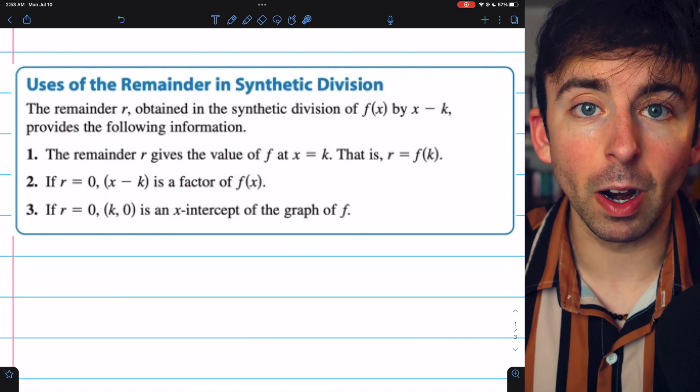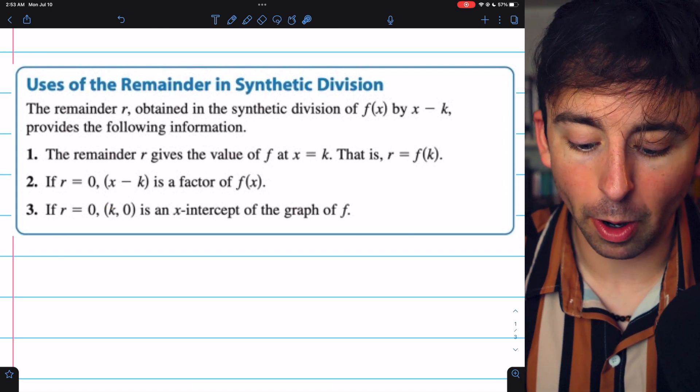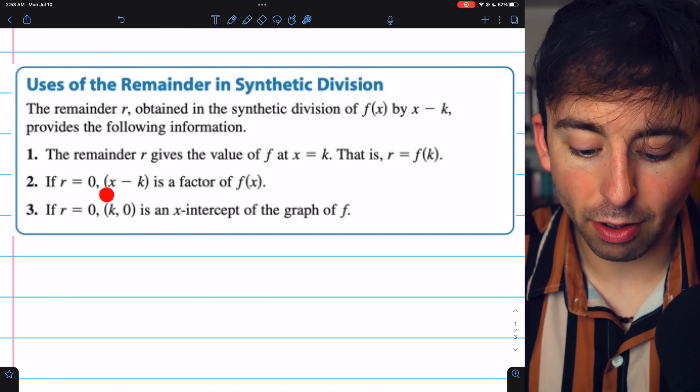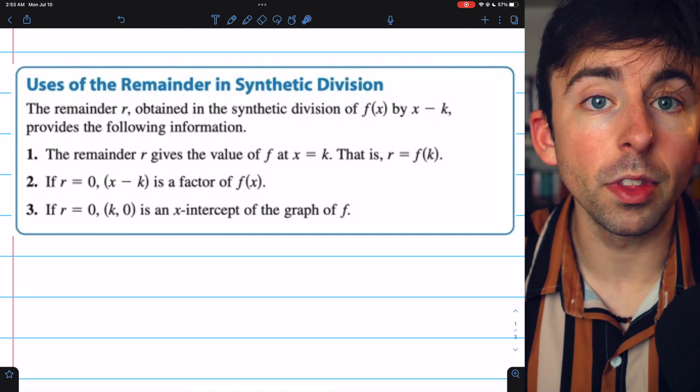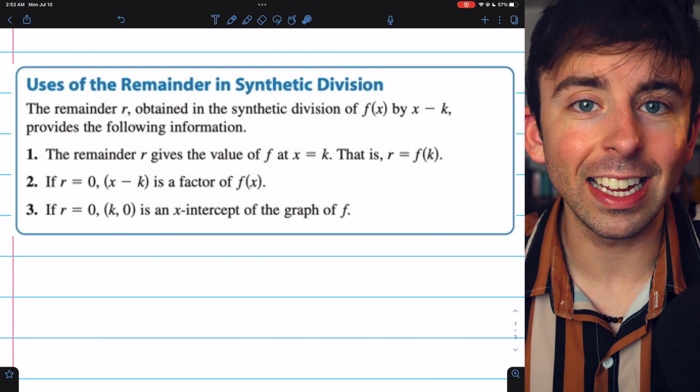If its remainder is 0, then it must be a factor. And then that would tell us that (k, 0) is an x-intercept of the graph. If x minus k is a factor, and the remainder thus would be 0, that would mean that (k, 0) is an x-intercept.